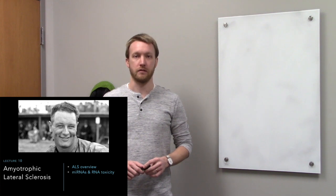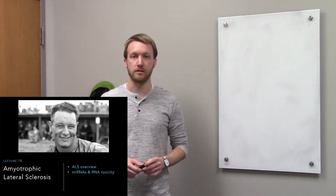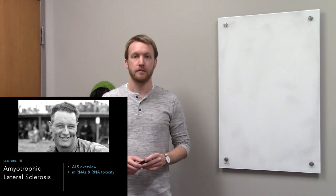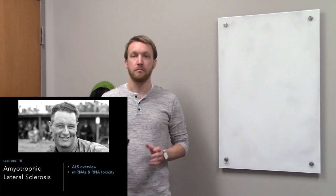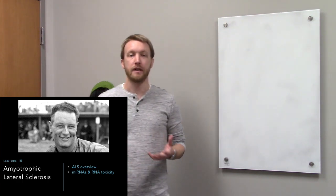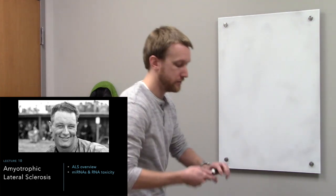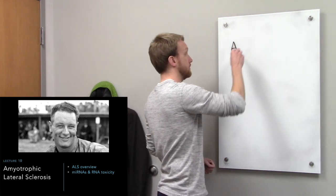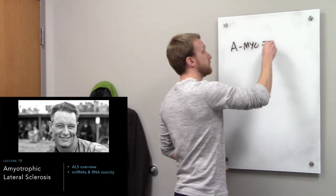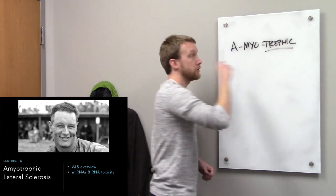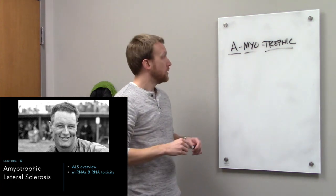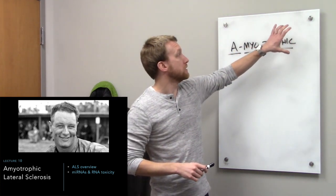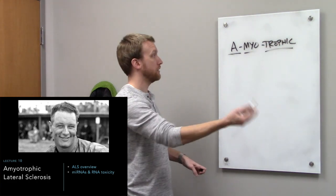This lecture is about amyotrophic lateral sclerosis, or Lou Gehrig's disease. This is a neurodegenerative disorder that targets motor neurons — either upper motor neurons or lower motor neurons — and inevitably, both are going to die. Breaking down the name: 'trophic' means nurturing, 'myo' means muscle, and 'a' means not. So amyotrophic means we're seeing the wasting of muscles — a lack of muscle nurturing.